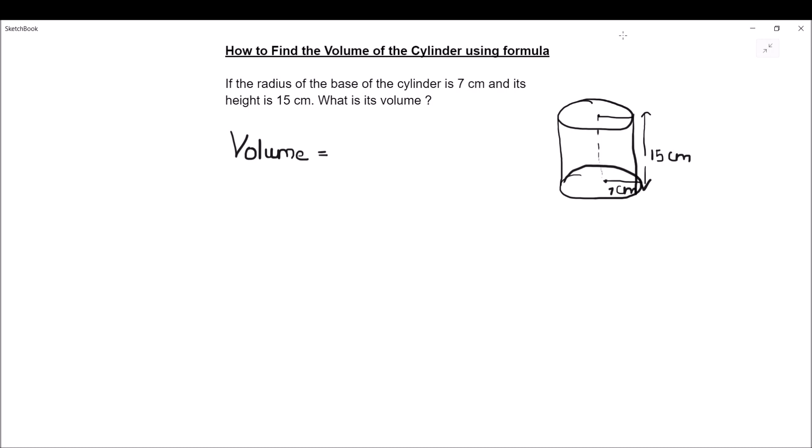Volume of the cylinder is equal to the area of the base of the cylinder, which is πr², times the height of the cylinder, which is h. So πr²h is the formula for finding the volume of the cylinder.